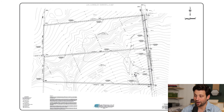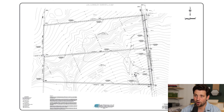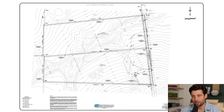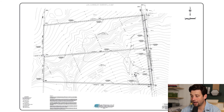The first document that we get as builders, designers, homeowners, or landowners is the survey. This survey shows the extents of the property — the boundaries. You can see that it's two tracts, two 20-acre tracts that we have put together. You can see that there's already a half-acre pond on the lower tract towards the east side.